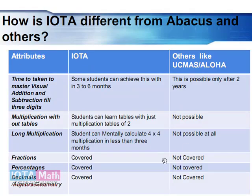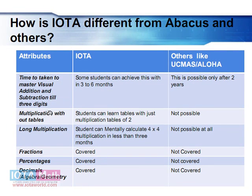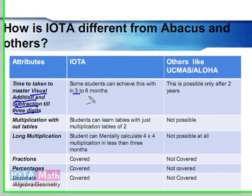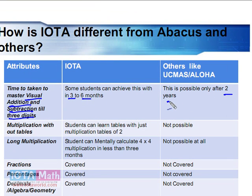Many people may argue that IOTA doesn't teach mental arithmetic like UC Maths and Aloha, but that is not the case. Our students learn all mental arithmetic systems in a visual fashion — they can do all the methods visually without any tool. For example, visual addition and subtraction up to three digits can be learned within three to six months, while in UC Maths it takes two years.